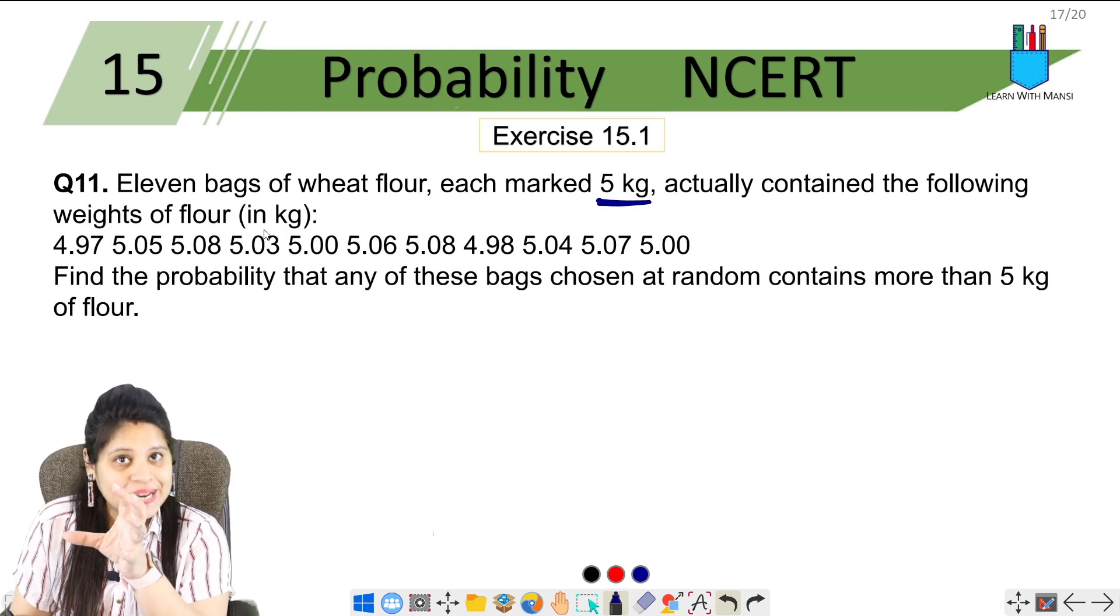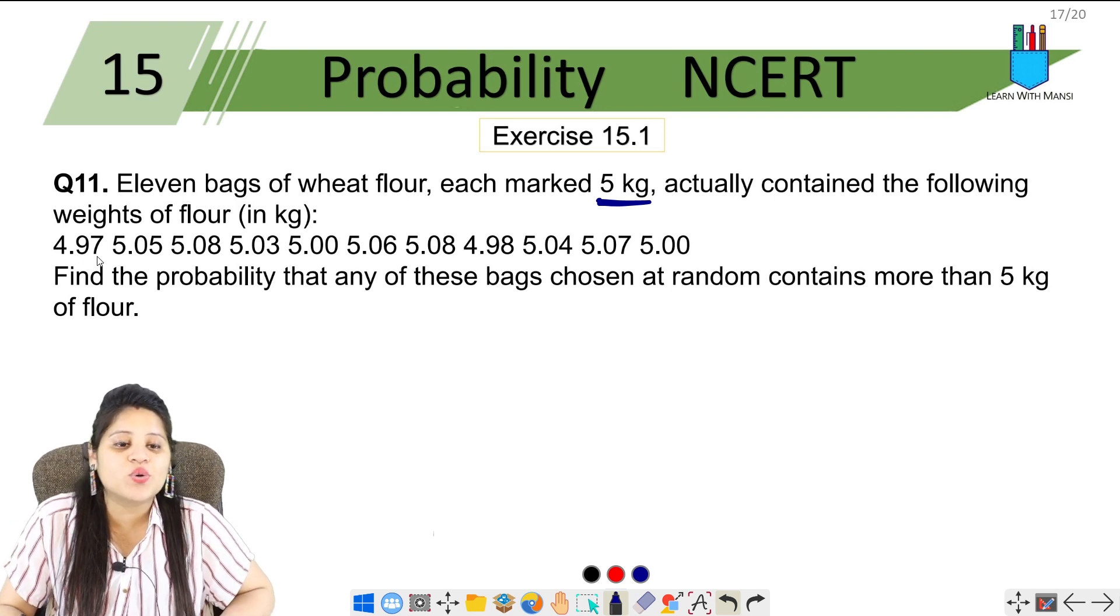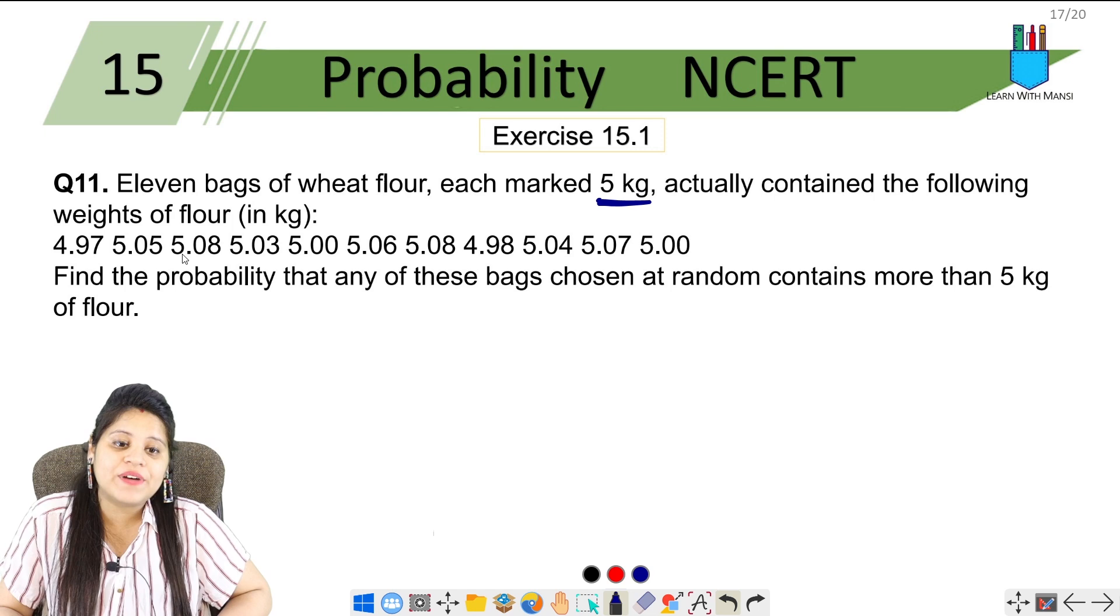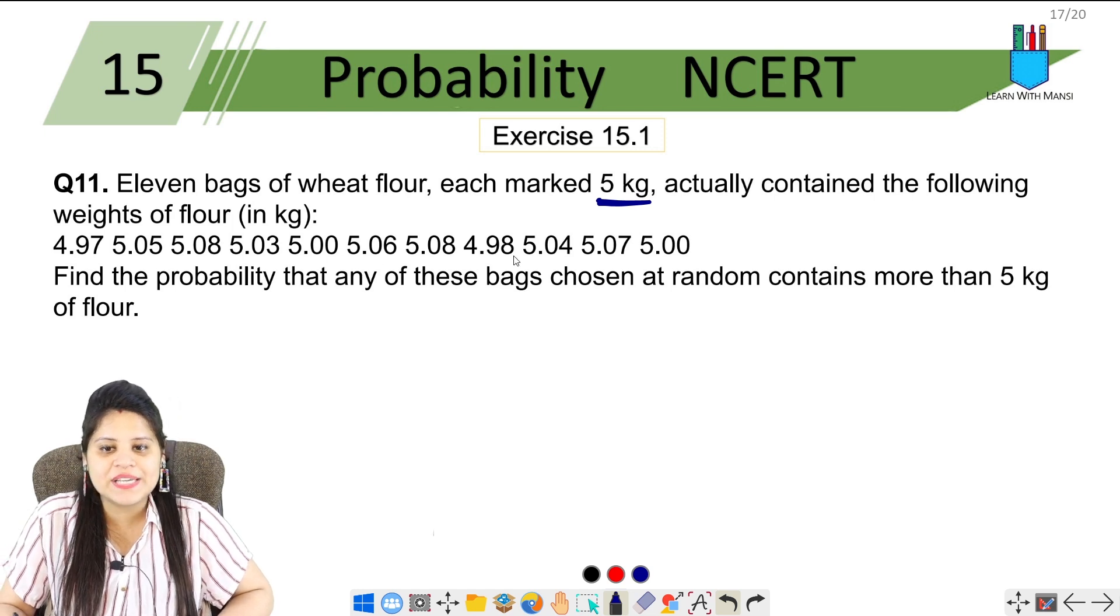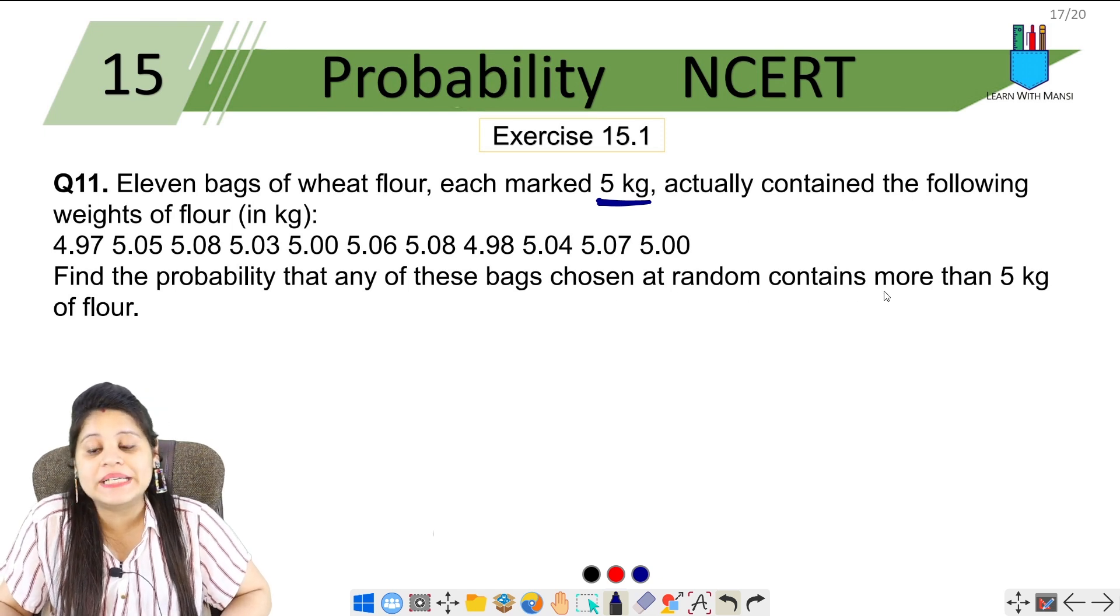So 11 packets are marked 5 kg, but their actual weights were 4.97, some had 5.05, then 5.08, 5.03, and so on - different weights. Find the probability that any of these bags chosen at random contains more than 5 kg of flour.